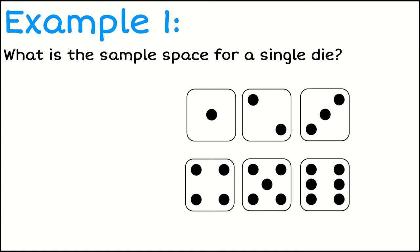We could get a 1, a 2, a 3, a 4, a 5, or a 6. So those are our sample space. So I would simply just write sample space equals, and I would list out 1, 2, 3, 4, 5, 6.